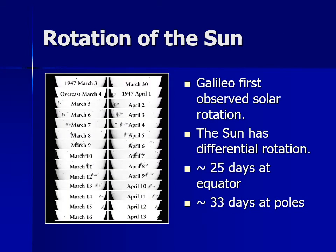Galileo Galilei recorded observations of the sun. Others had seen observations of the sun prior to that. When the sun is rising or setting, it's not blindingly bright because of atmospheric extinction. People have noticed occasionally spots on the sun. Galileo recorded spots, and he noticed that on different days the spots appear to move. His interpretation of that was that the sun rotates.